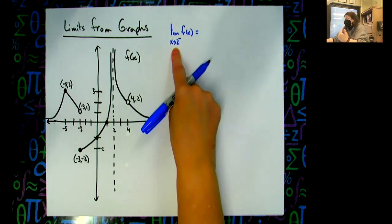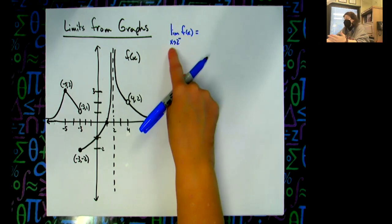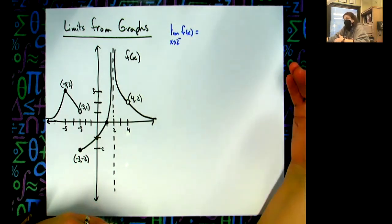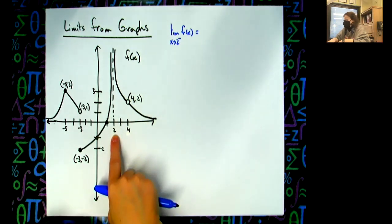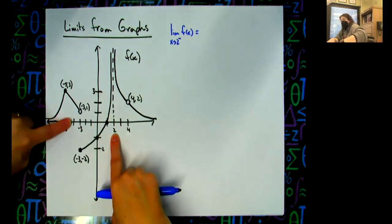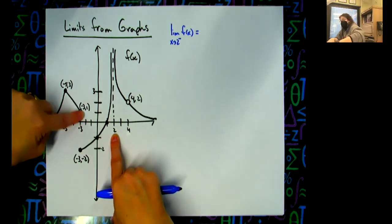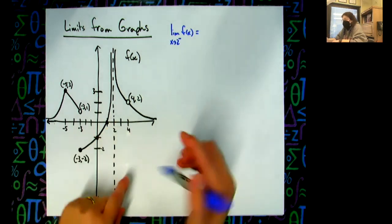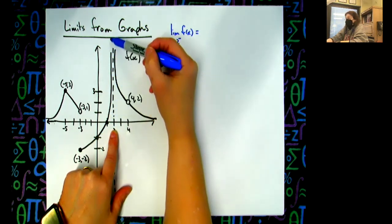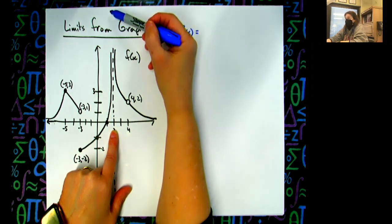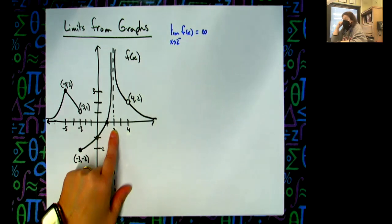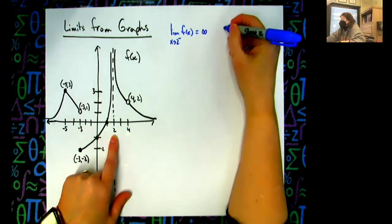We are looking at what value x approaches — it gets infinitely close to — and the answer to the limit problem is always a y value. Here's two on my x axis. I'm approaching two from the left; that's what that little negative sign means. I'm coming from this direction. I don't care what's happening way out here; I care about when it gets infinitely close to two. So I look at the function — what y value is it approaching? Positive infinity. So the limit coming from the left is positive infinity.